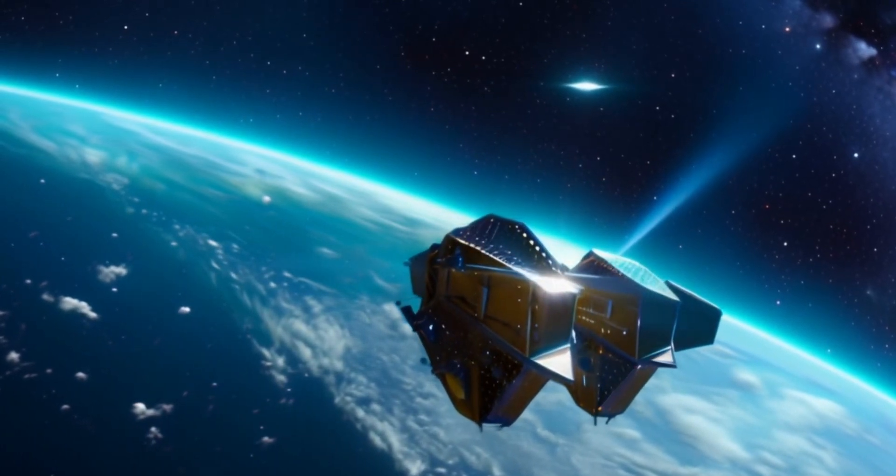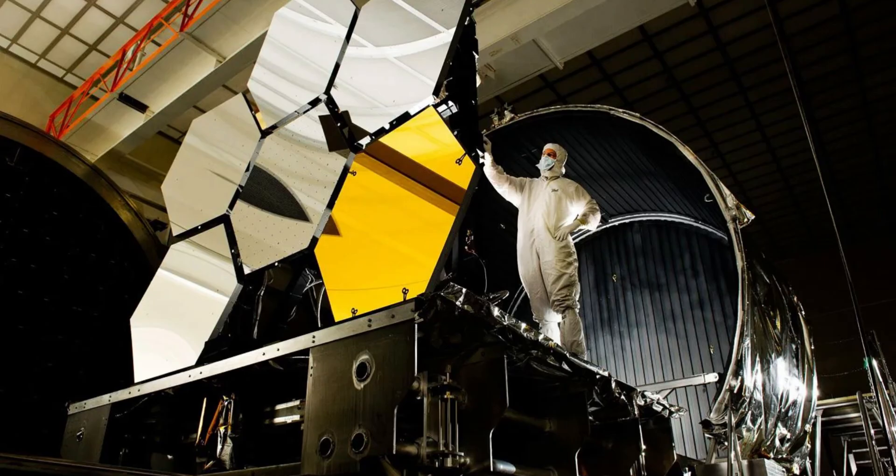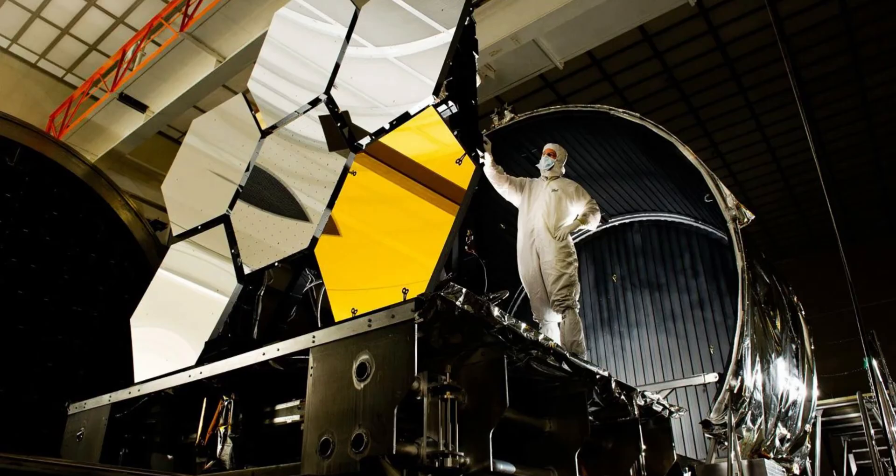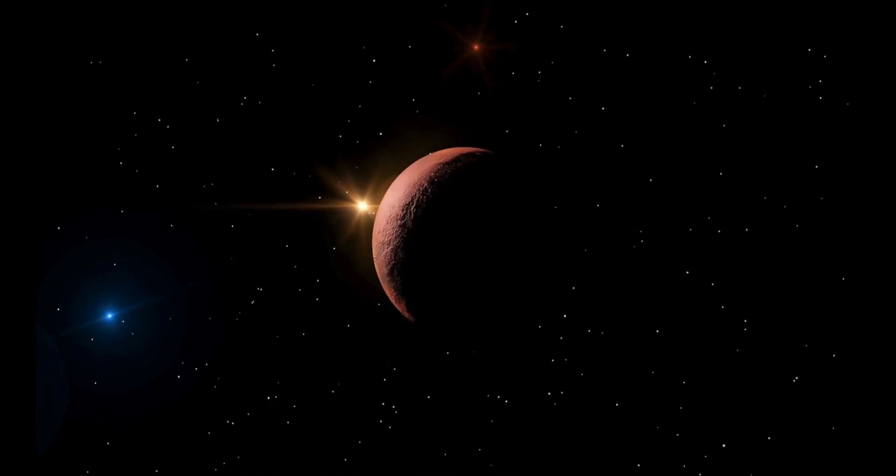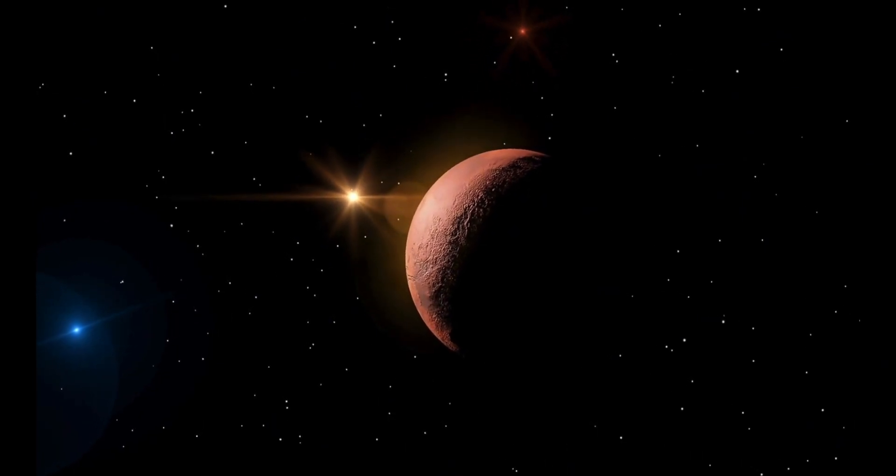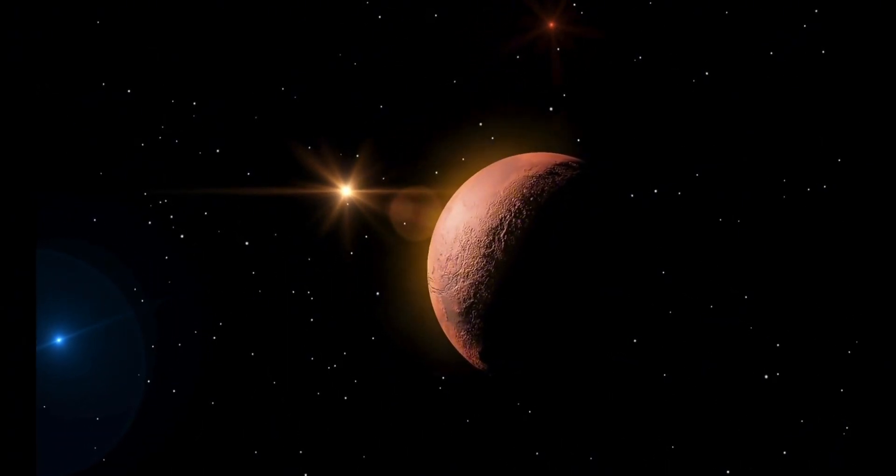The James Webb Space Telescope, JWST, has been at the forefront of many groundbreaking discoveries since its launch, but one of the most tantalizing revelations is the potential evidence of life on Proxima b, an exoplanet orbiting the nearest star to our sun, Proxima Centauri.